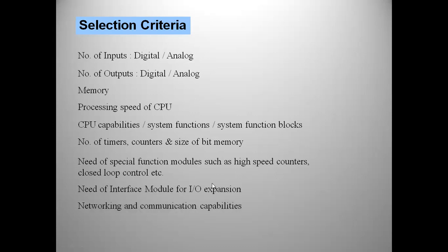Also check the need for any special modules like high-speed counters or PID controllers. Consider the need for interface modules for IOs — whether local IO expansion or remote IO expansion is needed. Then evaluate networking and communication capabilities, as different protocols are available today such as PROFIBUS, PROFINET, Modbus, RS232, and RS485. Based on all these requirements, select the CPU from a particular brand — like Siemens, Allen-Bradley, or others available in the industry.